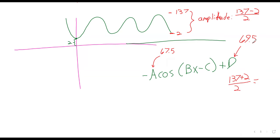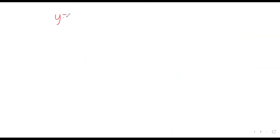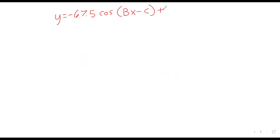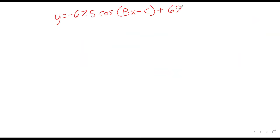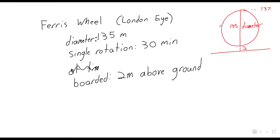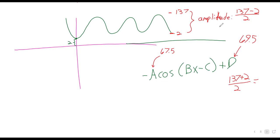So halfway done, really more than halfway done, because C is going to turn out to not be something we have to worry about. So negative 67.5 times the cosine of Bx minus C plus 69.5. We know that the period is 2 pi divided by B. The period is 30. One full trip from the bottom to the top and then back to the bottom takes 30 minutes.